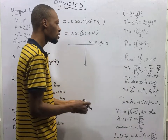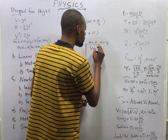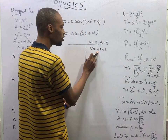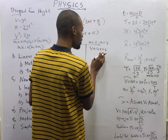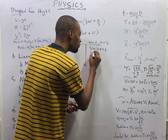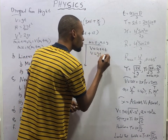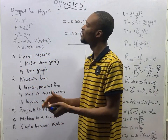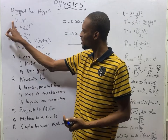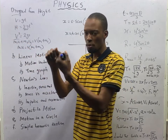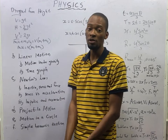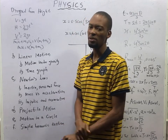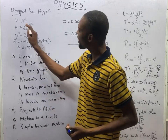If this is true, it also means that instead of V equals U plus AT, since U is zero, V becomes AT. And since A is G, therefore V equals GT. For a body dropped from height, the velocity equals gravity times time. Because A becomes G in Newton's equations of motion, and U is zero because it drops from height.